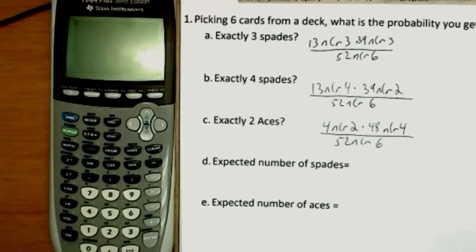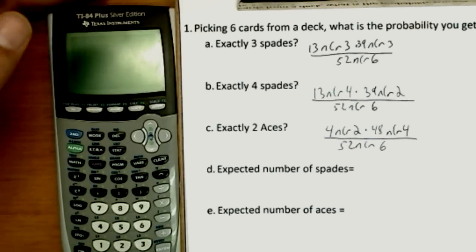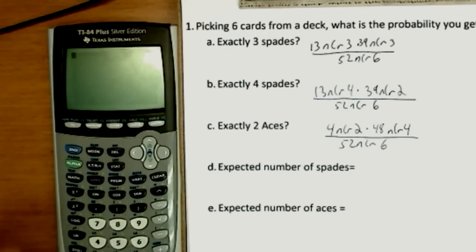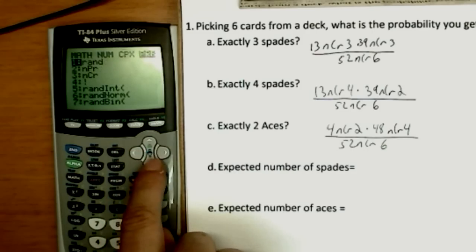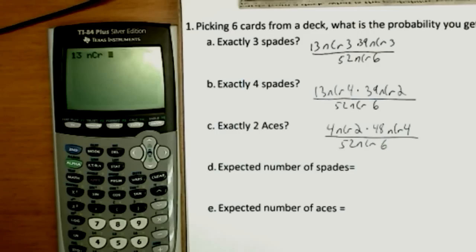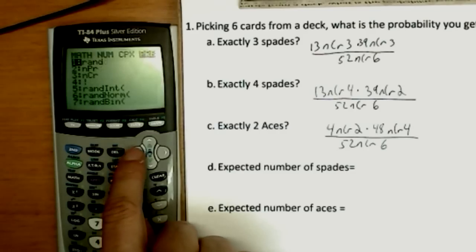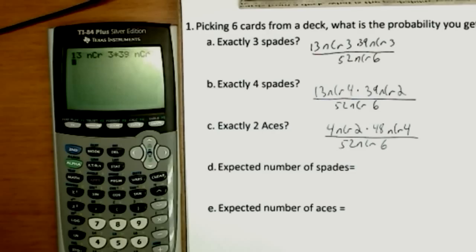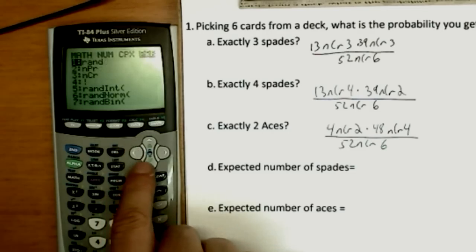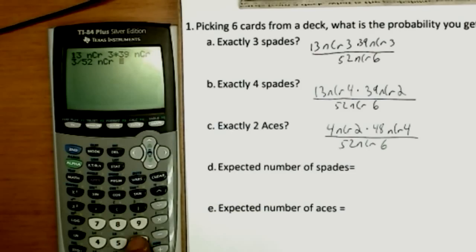Now to show how to actually calculate that on the calculator, turn the calculator on. I'll move it down so the screen is more easily visible. You may not see all the numbers I pushed, but that'll be all right. Now we have to enter the first number first. So I type 13 and I push math and I move to the probability button. NCR, 13 NCR3 times 39, repeating the same process, math, probability, NCR3, divided by 52, math, probability, NCR, 52 NCR6. So you can, if you have to review that on the video, that will be fine.